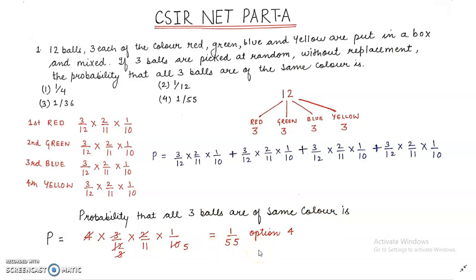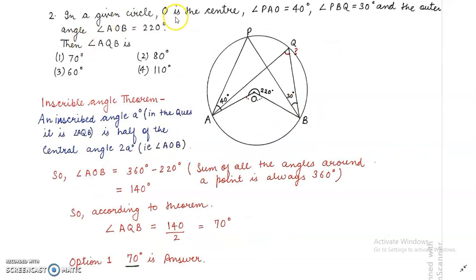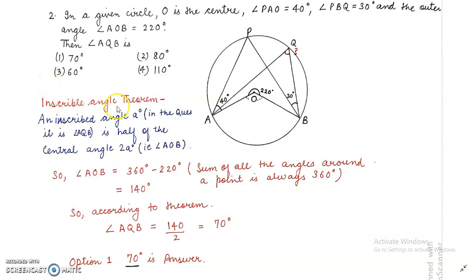Now moving to the next question. In a given circle, O is the center; angle PAO is 40 degrees, angle PBQ is 30 degrees, and the outer angle AOB is given as 220 degrees. Then angle AQB is — we are given four options: 70 degrees, 80 degrees, 60 degrees, and 110 degrees. This is an easy question; the inscribed angle theorem will be applied. The inscribed angle theorem states that an inscribed angle is half of the central angle — that is, angle AQB = (1/2) × angle AOB.